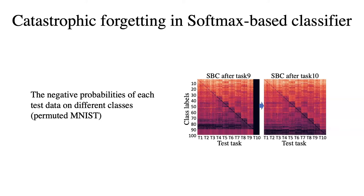Here is an example. The permuted MNIST has 10 tasks, and each task has 10 classes. For the data from task 1, the ground-truth class ranges from 0 to 9. The last figure shows the result of the softmax-based classifier after training on task 10. The correct prediction should lie along the diagonal. As we can see, for the softmax-based classifier, the lowest negative probability happens between 80 to 90 — this occurs for all data from different tasks, even when their ground-truth labels are not 80 to 90. After training on task 10, the lowest negative probability shifts to 90 to 100. This means the softmax-based classifier has already forgotten previously learned tasks and only predicts classes in the current training task.